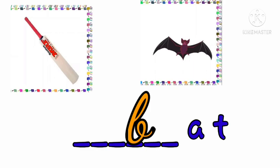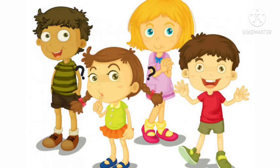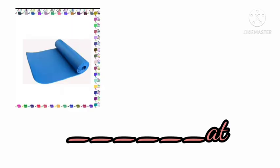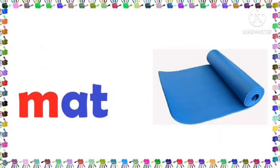Now another word with AT. Here we have A-T at the end, and there is a dash before it. See the picture — we use it to sit on. Yes, I hope you have understood. The word is MA — M-A — at, so M-A-T: mat. M-A-T, mat.